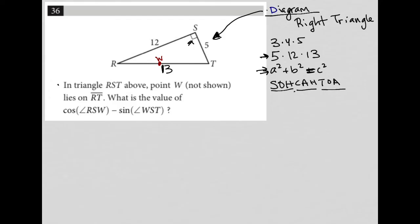What is the value of the cosine of angle RSW? So angle RSW would be, based upon where I have W, it would be this angle here, and then we're going to subtract,